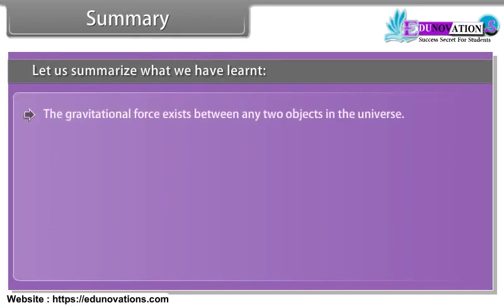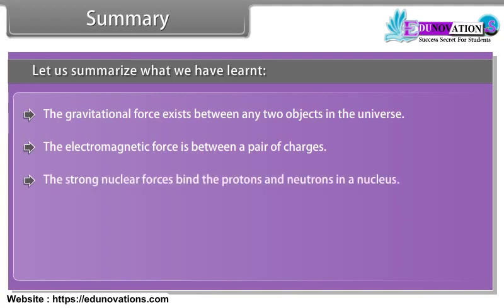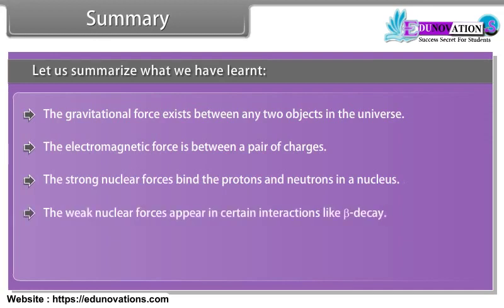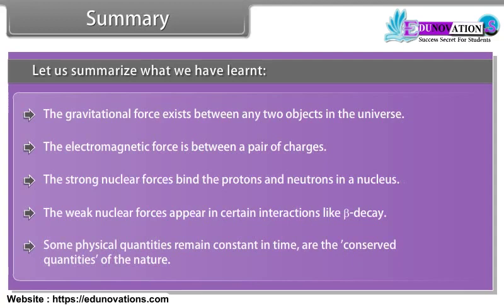The gravitational force exists between any two objects in the universe. The electromagnetic force is between a pair of charges. The strong nuclear forces bind the protons and neutrons in a nucleus. The weak nuclear forces appear in certain interactions like beta decay. Some physical quantities remain constant in time — these are the conserved quantities of nature.